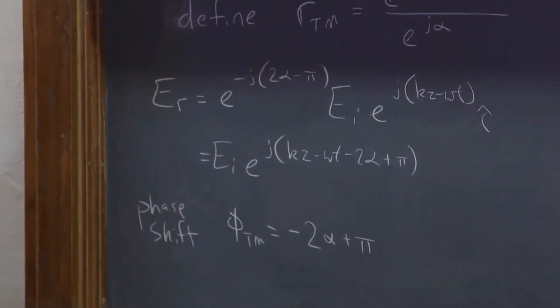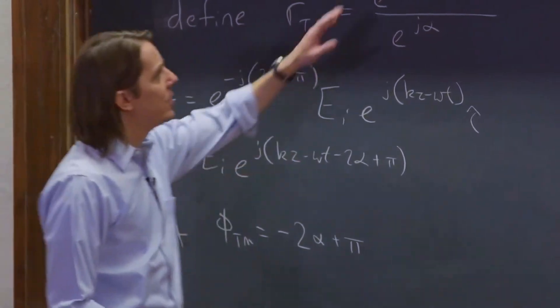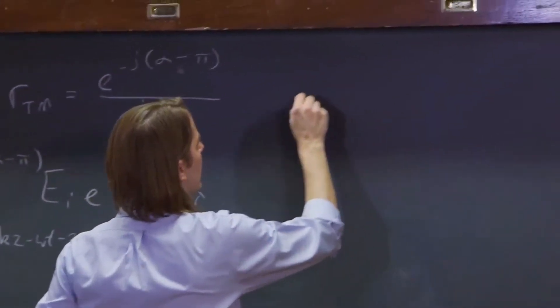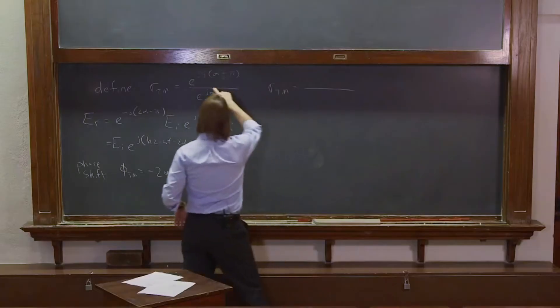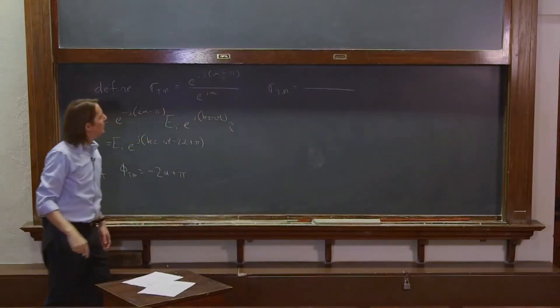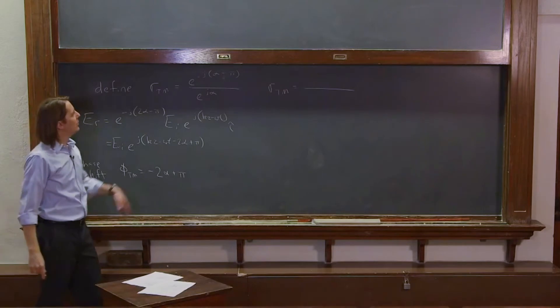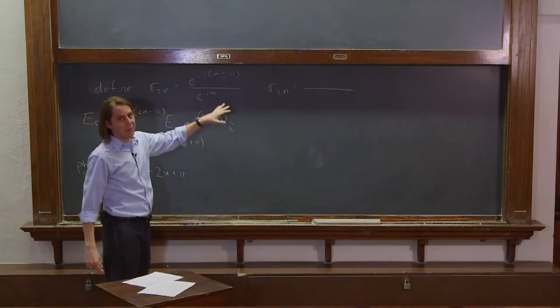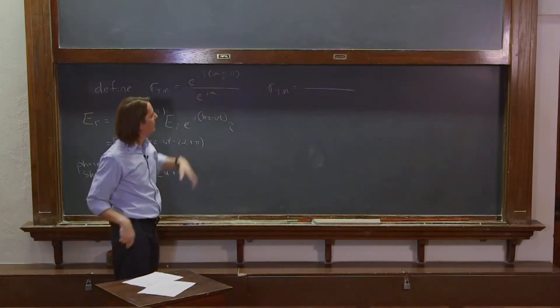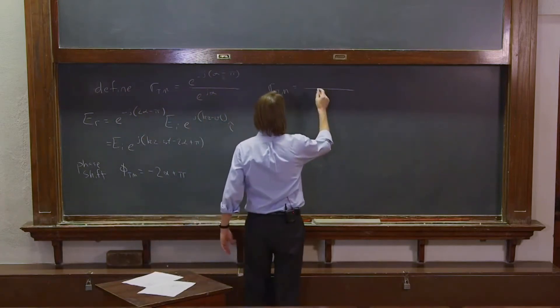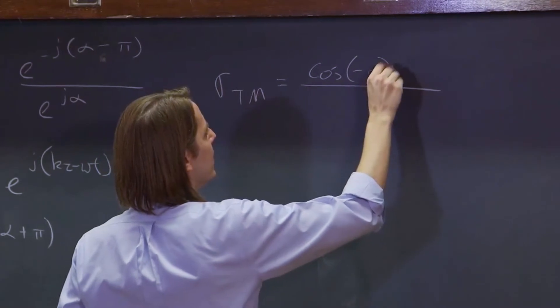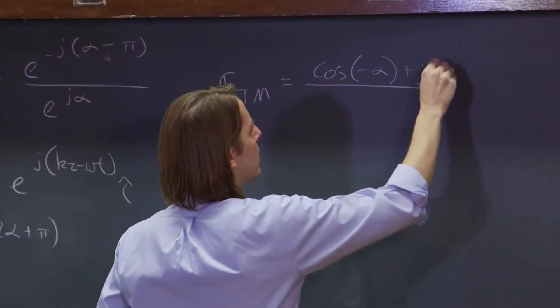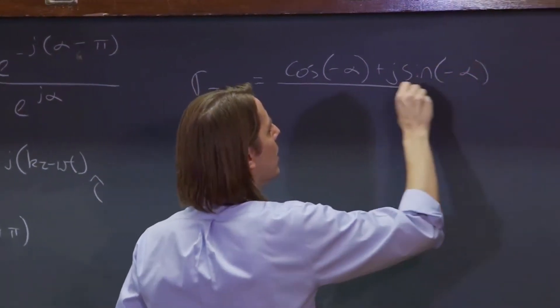OK, if we're going to do that, let's now go ahead and write out RTM. So it's e to the minus j alpha minus pi, which is the same as e to the minus j alpha times e to the pi, because the two minuses make a plus. So let's first write e to the minus j alpha. That's cosine of minus alpha plus j times the sine of minus alpha.